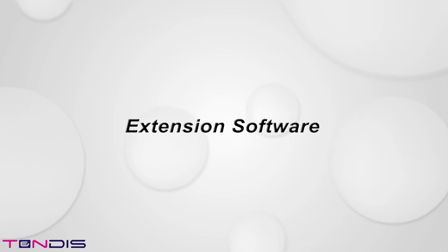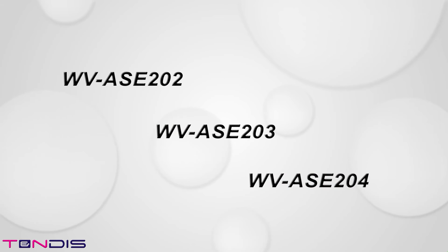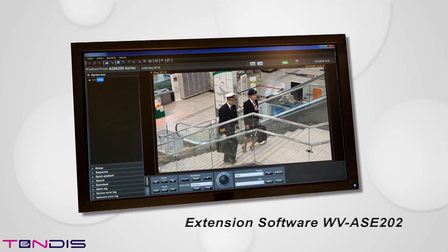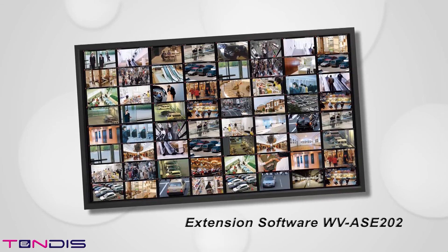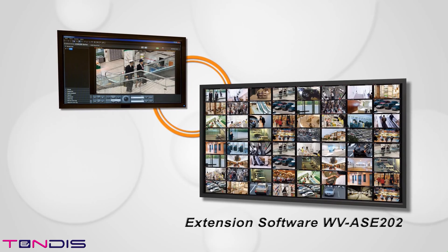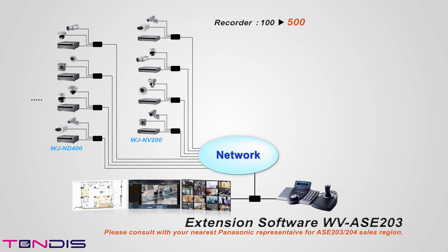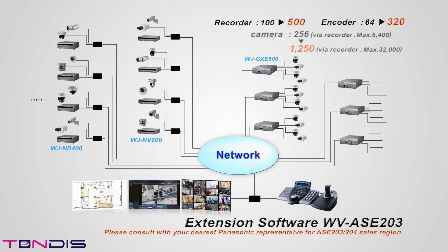WVASM200 can be combined with extension software WVASE202, WVASE203 and WVASE204 in addition to WVASE201 as an option for extended functionality. WVASE202 is a dedicated extension software capable of displaying pictures of 64 cameras in one monitor, effective for integrated monitoring of many cameras on a big screen. With the addition of WVASE203, connectable recorders can be increased to 500 units at maximum. Also, encoders can be increased to 320 units at maximum, making possible integrated control and operation of large-scale systems, including conventional analog cameras.